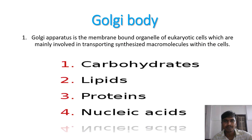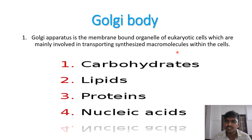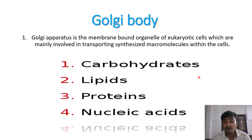Next is the Golgi body. The Golgi apparatus is a membrane-bound organelle found in eukaryotic cells. Unlike prokaryotic cells, which have no well-organized nucleus, eukaryotic cells have a well-organized nucleus.